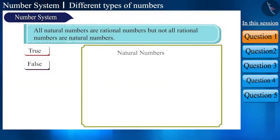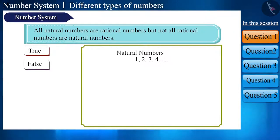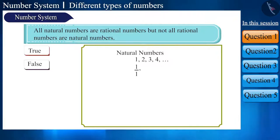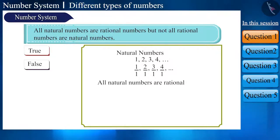We can call all natural numbers — 1, 2, 3, 4 — as rational numbers, because we can also write them as a ratio of integers such as 1/1, 2/1, 3/1, and 4/1. That is, all natural numbers are rational numbers.